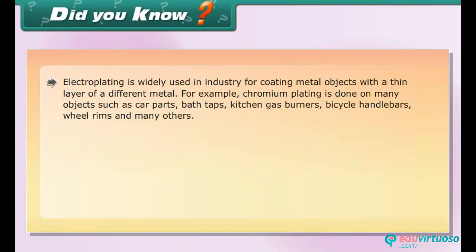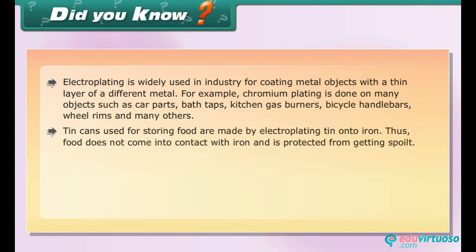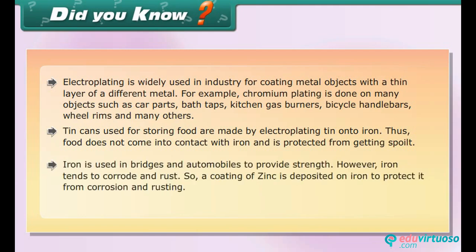Electroplating is widely used in industry for coating metal objects with a thin layer of a different metal. Chromium plating is done on many objects such as car parts, bath taps, kitchen gas burners, bicycle handlebars, and wheel rims. Tin cans used for storing food are made by electroplating tin onto iron, so food does not come into contact with iron and is protected from getting spoiled.